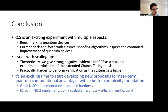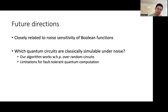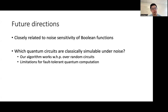Overall, it is a very exciting time to start developing new proposals for near-term quantum computational advantage with a better complexity foundation. The goal is to have a task that both enables NISQ implementation and still has scalable hardness. And of course, eventually the dream is to have an additional property of efficient verification by a classical algorithm. As future directions, this result is closely related to the noise sensitivity of Boolean functions, and it is very interesting to continue developing this connection to address open questions such as which quantum circuits are actually classically simulable under noise. Our algorithm works with high probability over random circuits, but the algorithm cannot decide which specific quantum circuits are simulable. Furthermore, progress on this question will also deepen our understanding of the limitations for fault-tolerant quantum computation. Thank you for your attention.